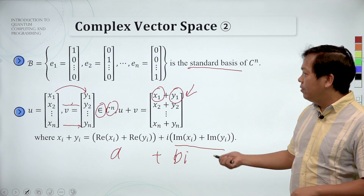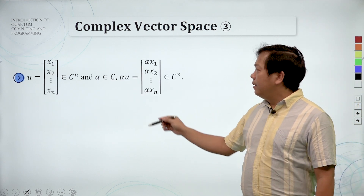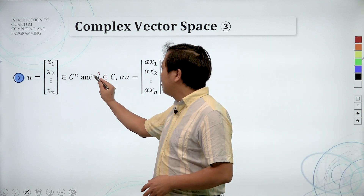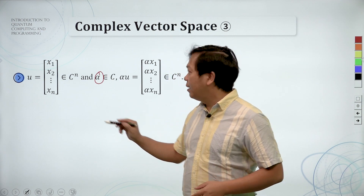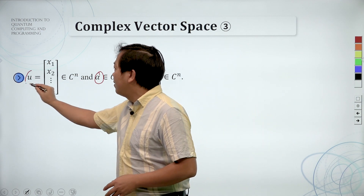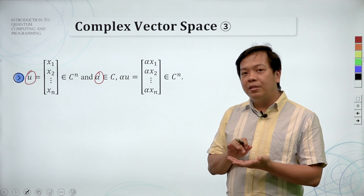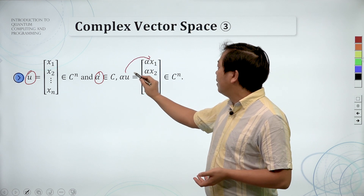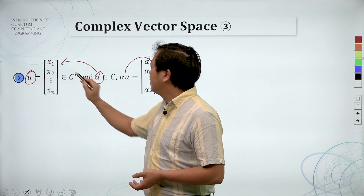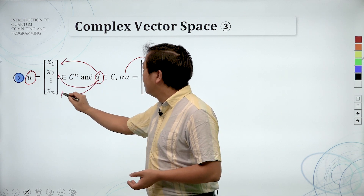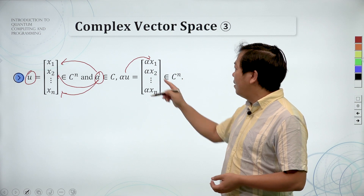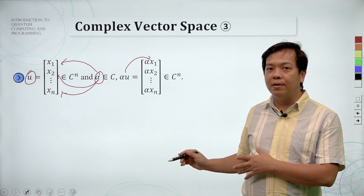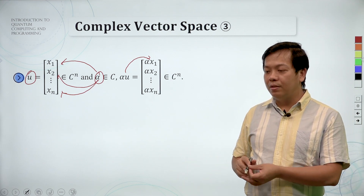We will look at more detail about how to do this in the future. When we have a complex number and want to multiply a scalar value — this is the scalar alpha in complex numbers, and this is the vector — when we multiply this complex number alpha with a vector, we multiply alpha with each element: alpha times x1, alpha times x2, and so on. That is very similar to how you multiply values in the real number.